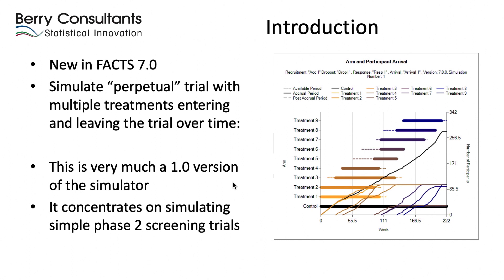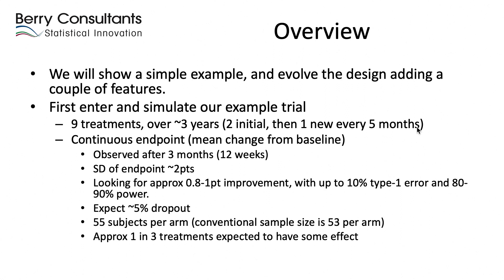This is very much a version 1.0 of the simulator, and to get one going, we've concentrated on simulating relatively simple phase two screening trials. Rather than exhaustively going over the different features, we're going to look at a simple example, evolve the design by adding in a couple of features, refine the design, and then look at how those features have affected the operating characteristics. We're going to set up a trial investigating nine treatments over a period of about three years.